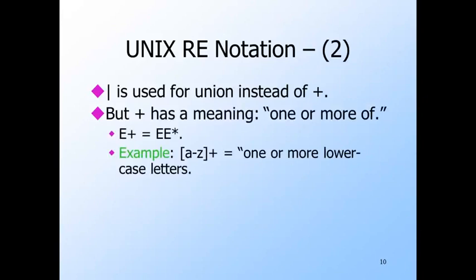The union operator is actually represented by a vertical bar instead of the plus. The plus symbol is another operator used like star and meaning one or more. That is, in the Unix notation, e plus is shorthand for e concatenated with e star.